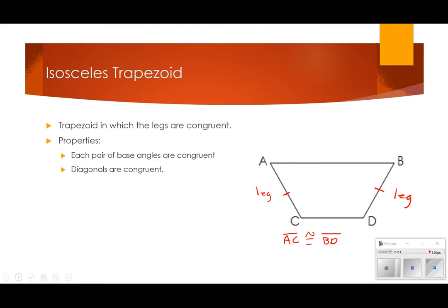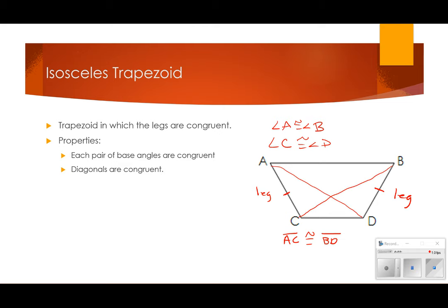So what are its properties? Each pair of base angles are congruent. In this case, angles A and B are congruent, and angle C is congruent to angle D. The diagonals of an isosceles trapezoid are also congruent, so AD is congruent to CB.